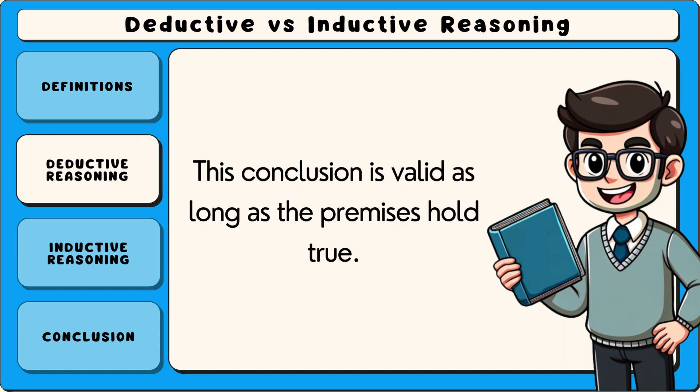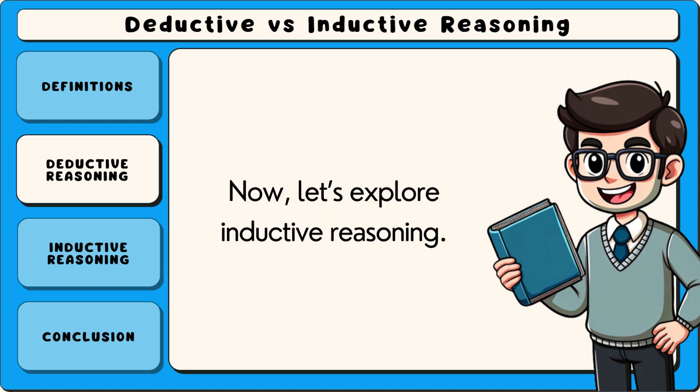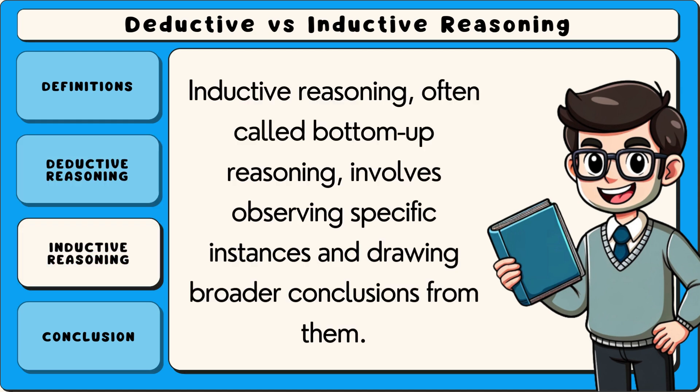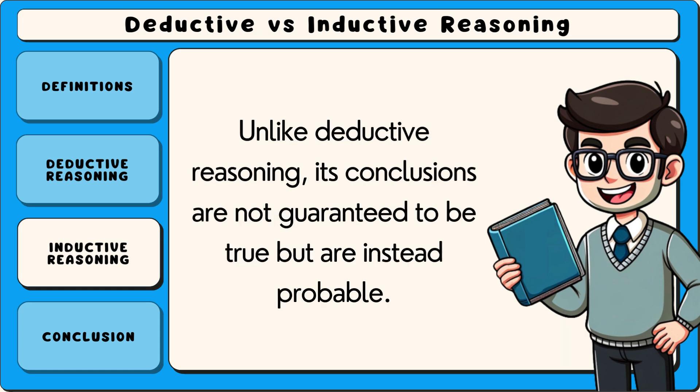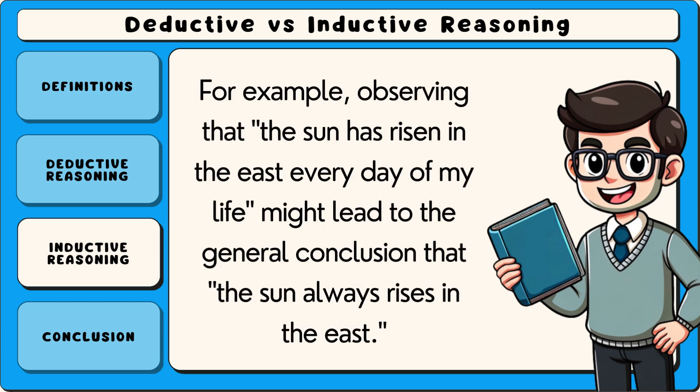This conclusion is valid as long as the premises hold true. Now let's explore inductive reasoning. Inductive reasoning, often called bottom-up reasoning, involves observing specific instances and drawing broader conclusions from them. Unlike deductive reasoning, its conclusions are not guaranteed to be true but are instead probable. For example, observing that the sun has risen in the east every day of one's life might lead to the general conclusion that the sun always rises in the east.